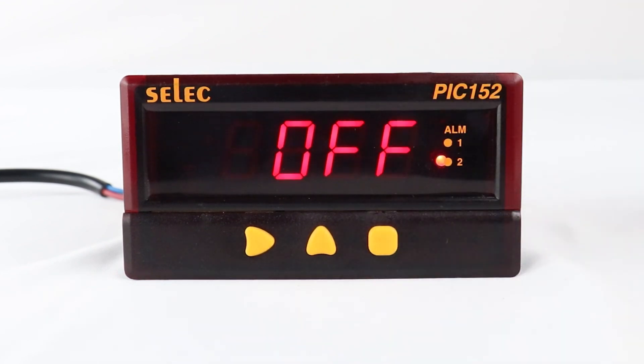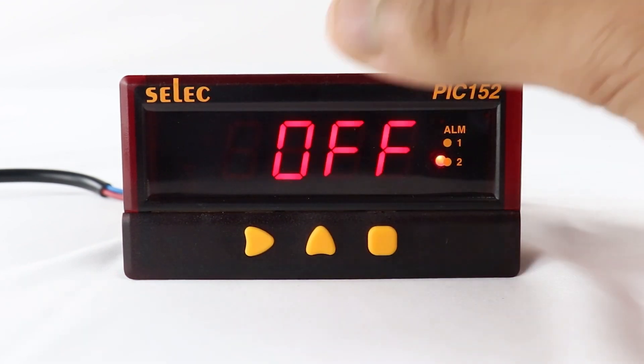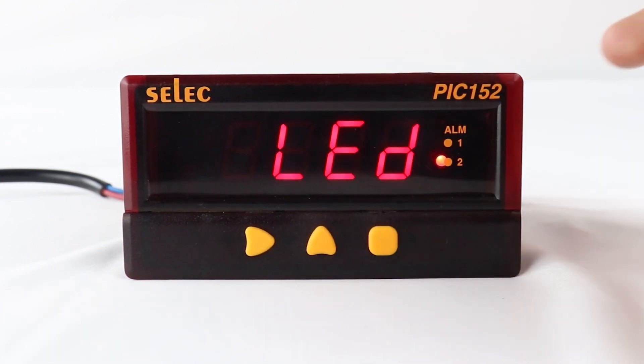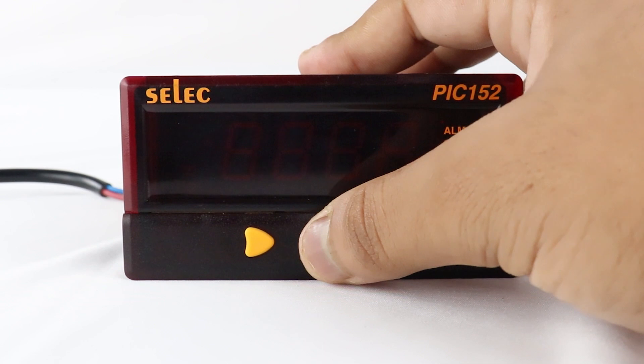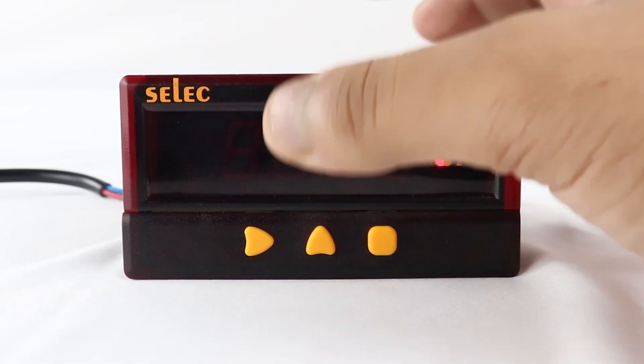Press square key to select alarm enunciator, whose function is to signal the presence of abnormal conditions by blinking LED. Then, press up arrow key to switch between LED and DSP, as per the requirement.